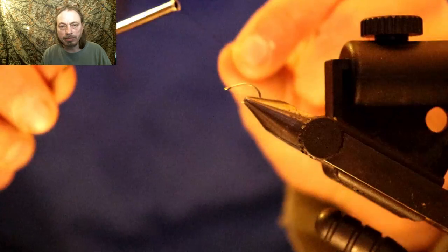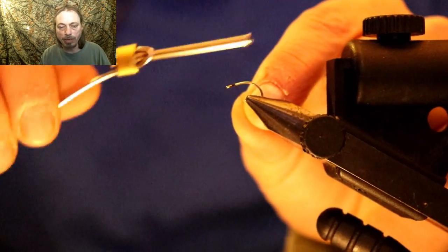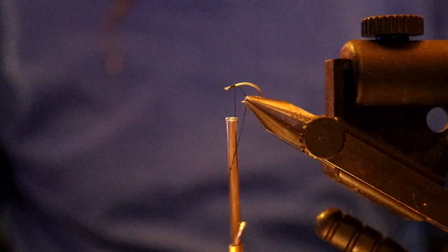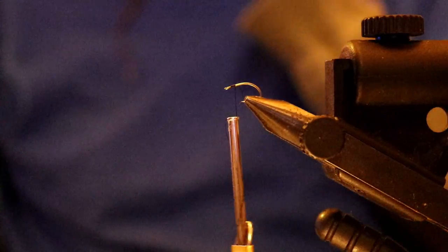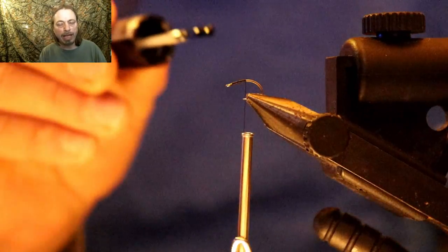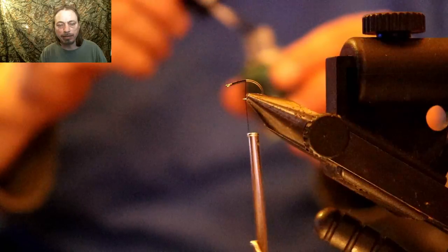We're gonna tie in some 70 denier black thread, run it all the way back into the bend of the hook. I'm sorry about that, we're gonna run it halfway back I forgot, and then we're gonna head cement it and let that dry.